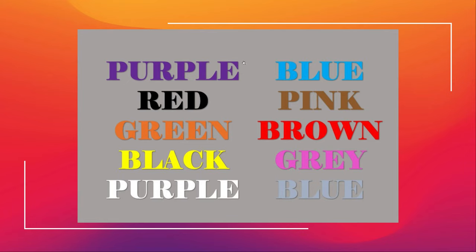If you try to read some of these words, it takes a quick half-second to adjust — because you're reading 'green' and it's in orange, and it just trips up your brain a little bit. It's like an Instagram filter that shows a color different from what it says. You have to manage your brain and quickly figure out what it is.